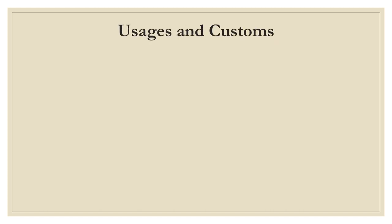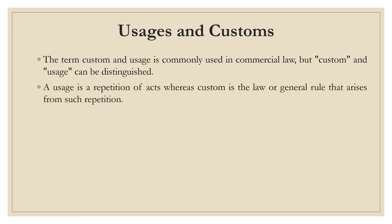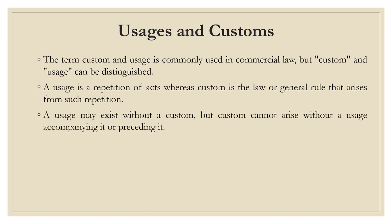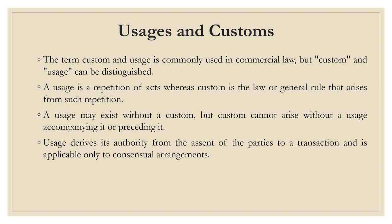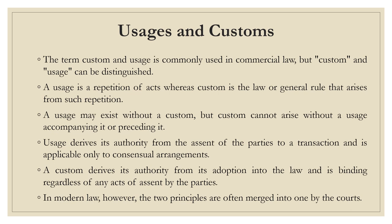Customs are usually confused with usages. Although both are commonly used in commercial law, they are different in nature. A usage is a repetition of act, whereas custom is the law or general rule which arises from such repetition. A usage may exist without a custom, but custom cannot arise without a usage accompanying or preceding it. Usage derives its authority from the assent of the party to a transaction and is applicable only to consensual agreements. A custom derives its authority from its adoption into the law and is binding regardless of any act of assent by the parties. In modern law, however, the two principles are often merged into one by the courts.